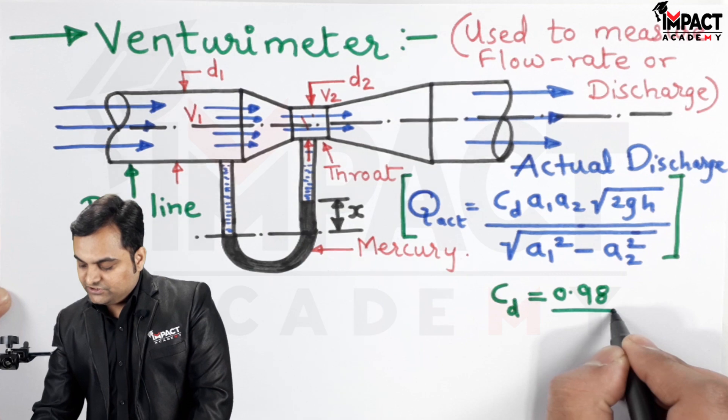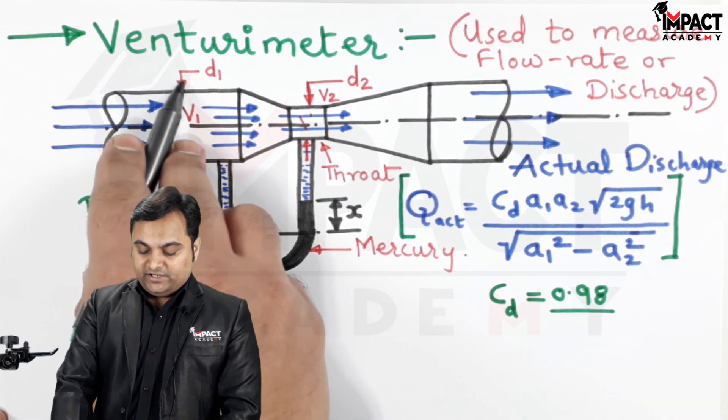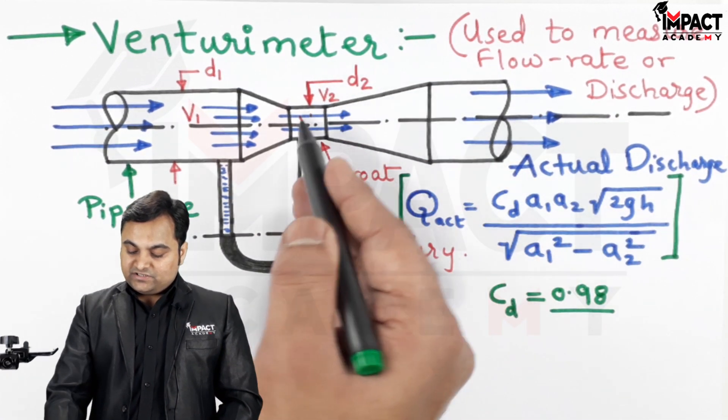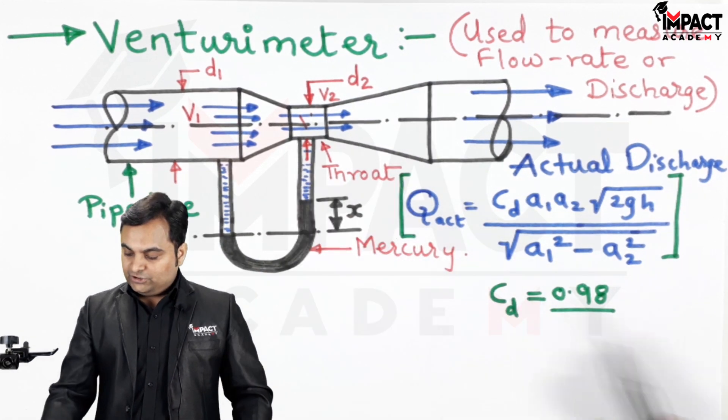This is the coefficient of discharge, then A1, A2. A1 is the area of the pipe we can say, or section 1. A2 is the area at the throat since it is having diameter D2 or section 2.